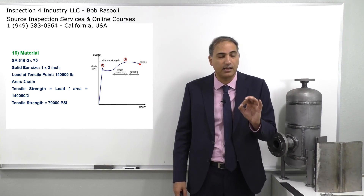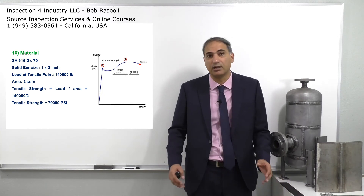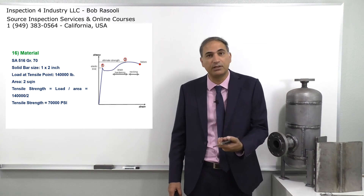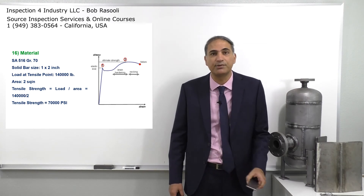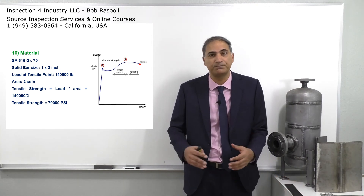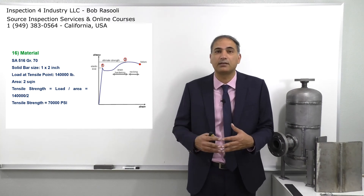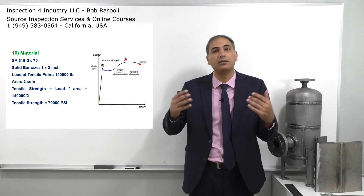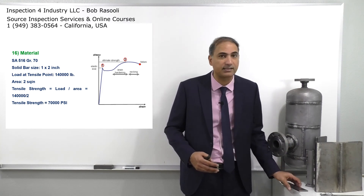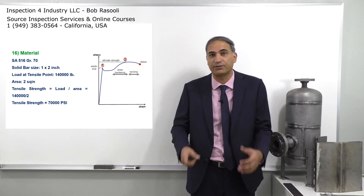Again, these values — 38,000 psi yield and 70,000 psi tensile — are at room temperature, because material gets softer when hot. If you put this material in a furnace at 700°F and then test it in a tensile machine, the yield strength will not be 38,000 psi and the tensile will not be 70,000 psi — they will be much lower. This is like what a blacksmith does: puts metal in fire, it gets softer, then hammers it.